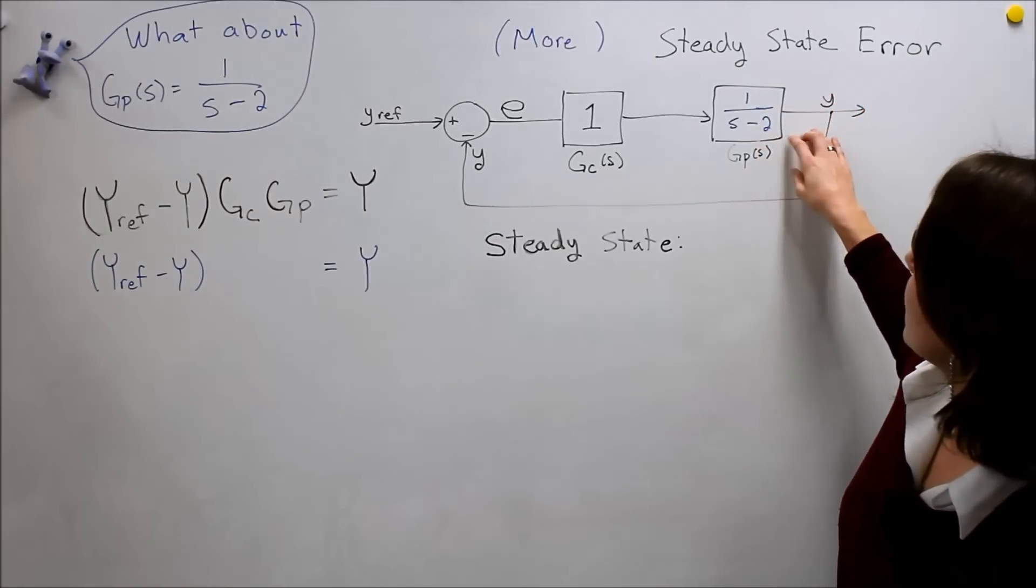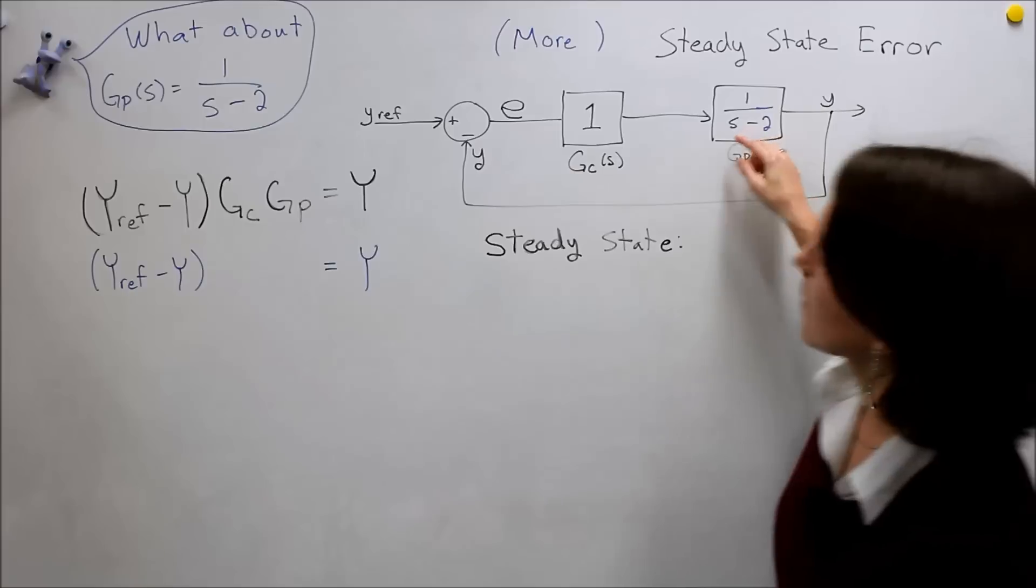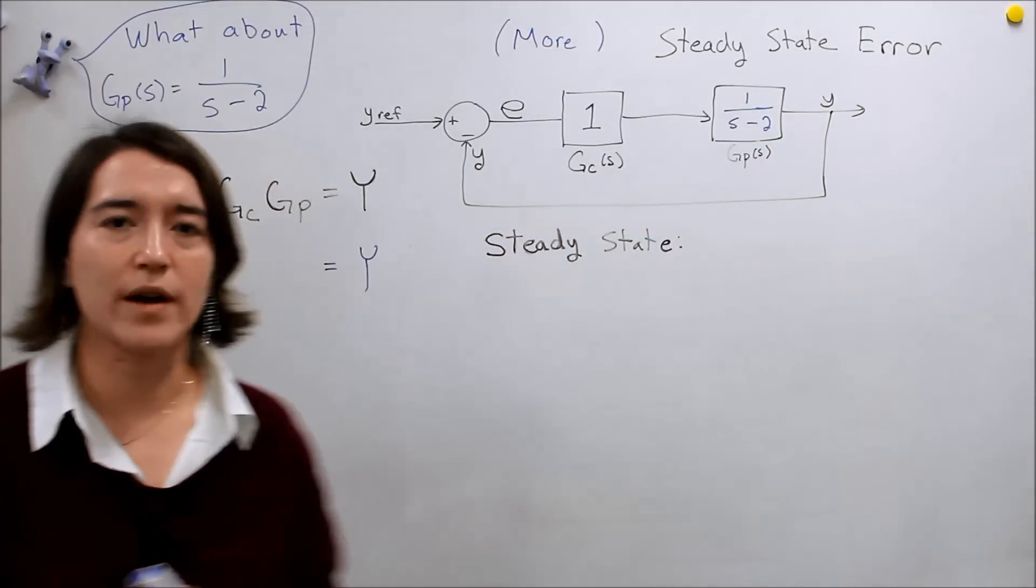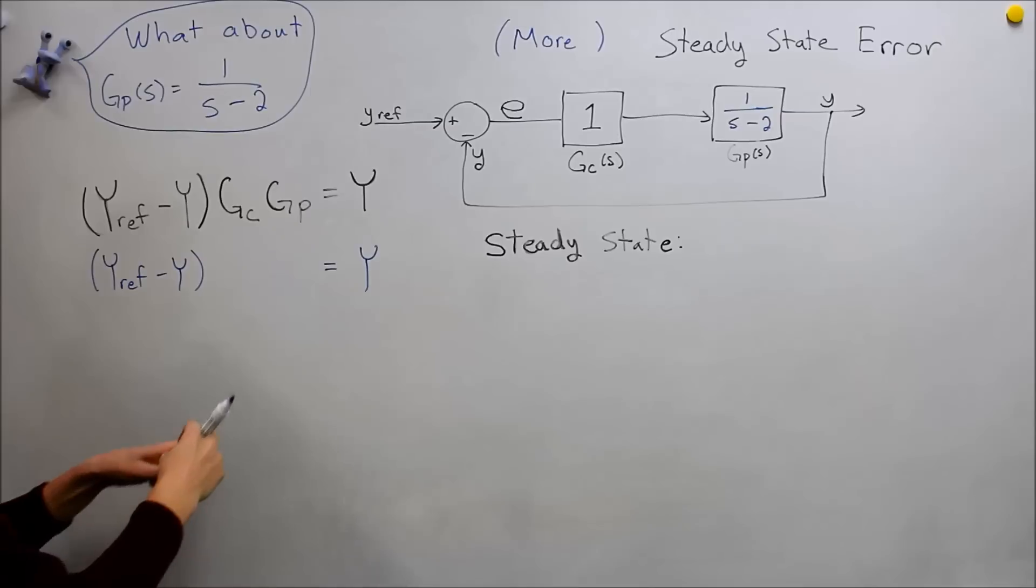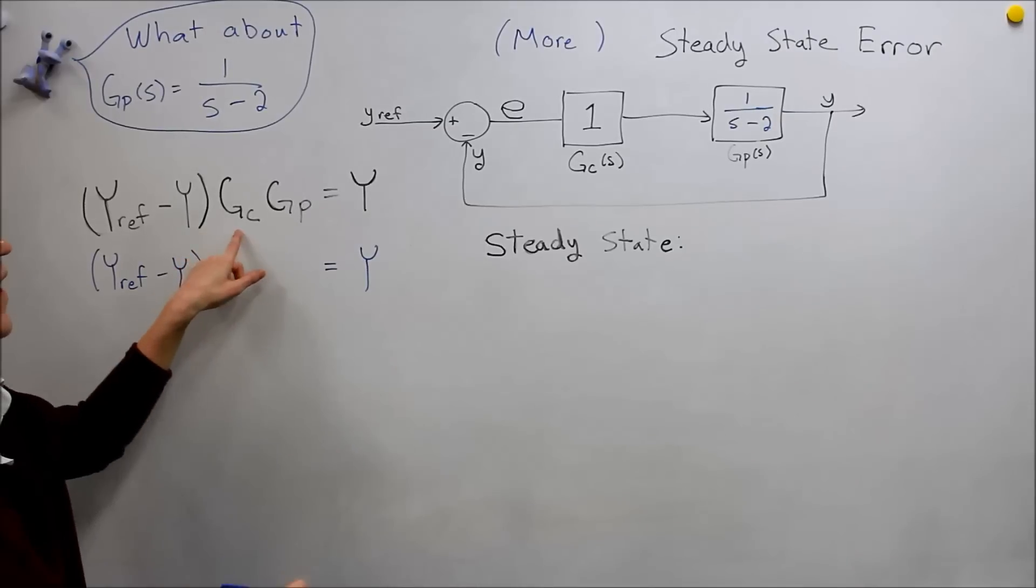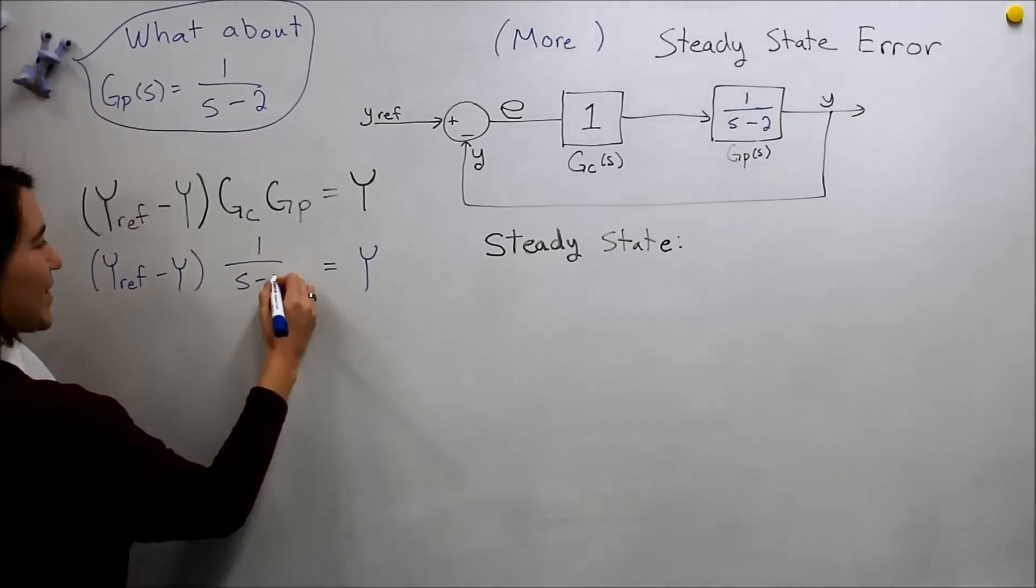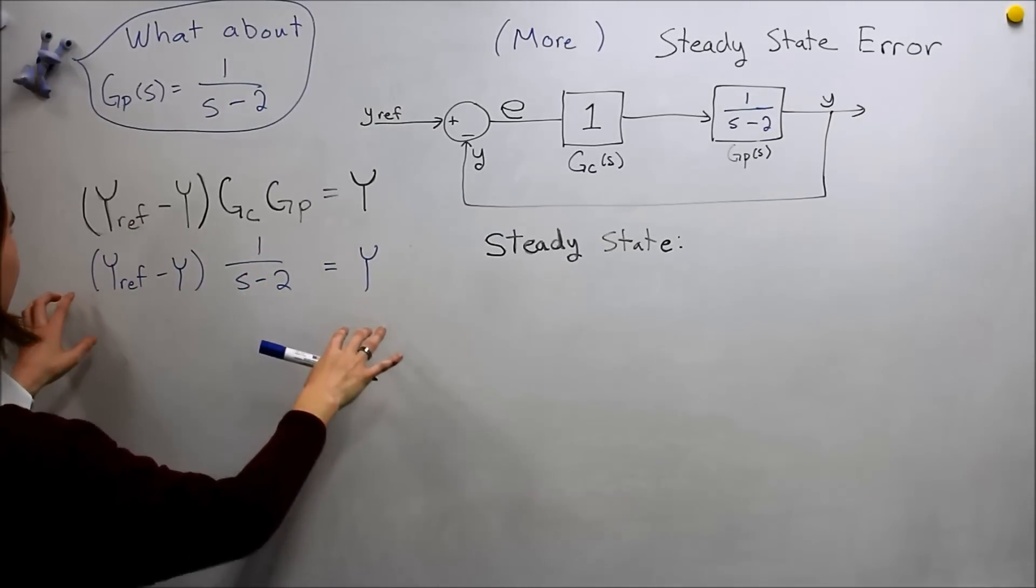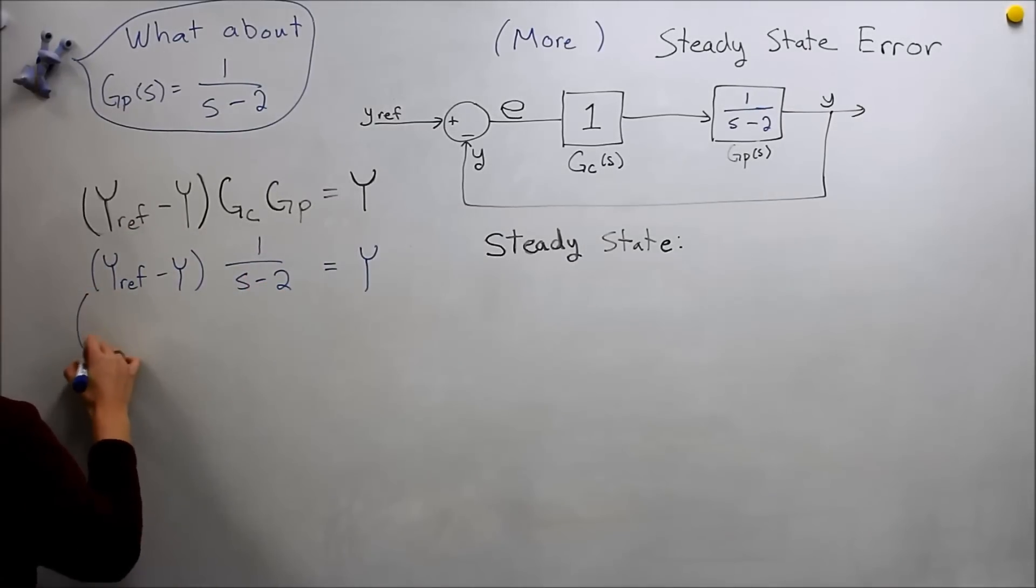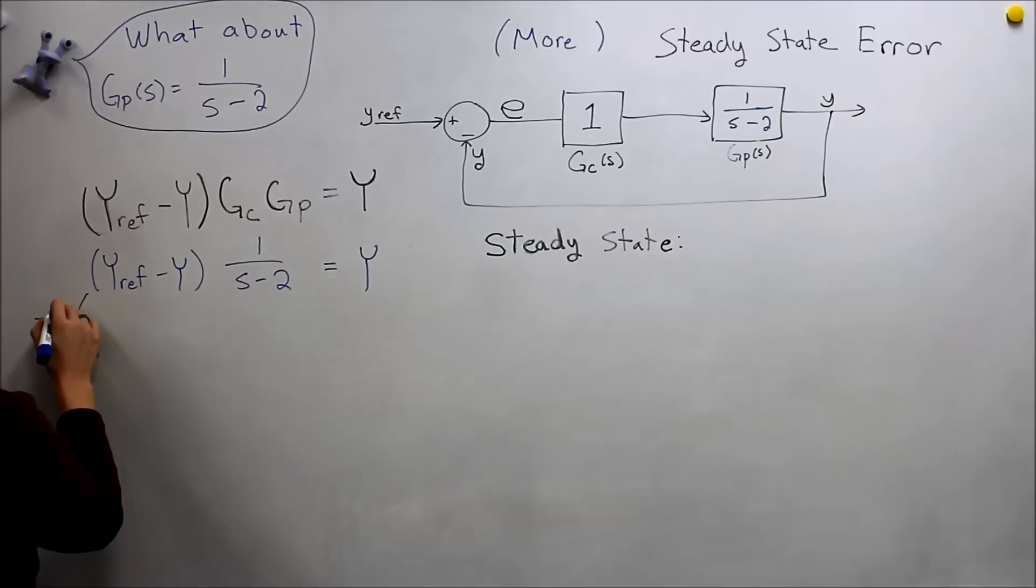So now we're going to change our system to s minus 2 here, and we're just going to go through the same process we did. So let's plug in these values. This is 1, this is s minus 1, 1 over s minus 2. And if we take the reverse Laplace of this, Laplace negative 1,